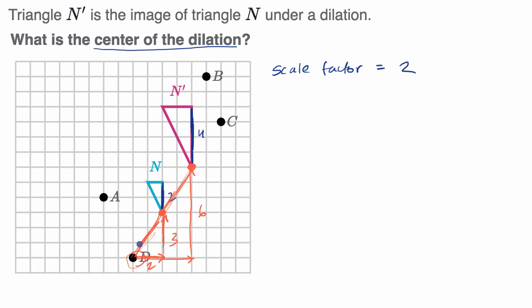You could use the Pythagorean theorem to calculate this distance and then the longer distance. But what you see is that the corresponding point is now twice as far from your center of dilation.